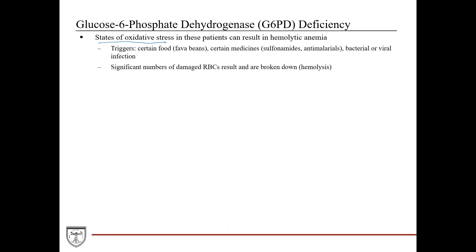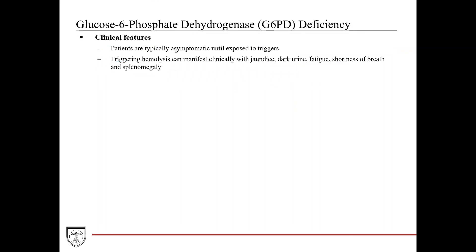These patients are vulnerable during states of oxidative stress, which can result in hemolytic anemia. Triggers include certain foods such as fava beans, medications such as sulfonamides or anti-malarials, and bacterial or viral infections, because infections produce significant oxidative stress. Significant numbers of damaged red blood cells are broken down in a process known as hemolysis. Patients are typically asymptomatic until exposed to these triggers. Clinical symptoms include jaundice, dark urine, fatigue, and shortness of breath.